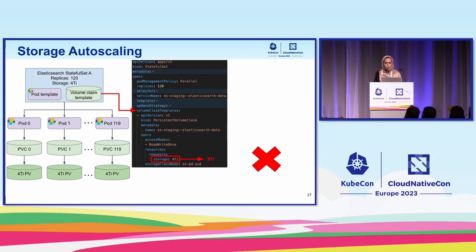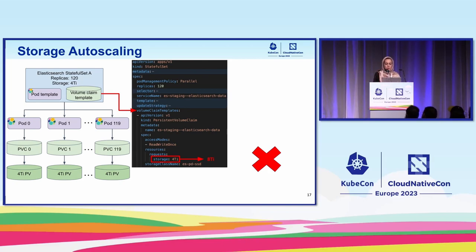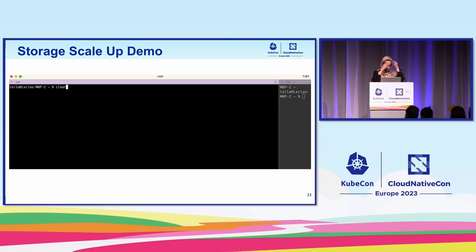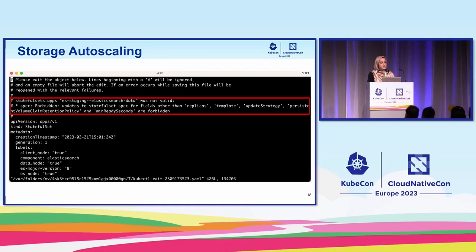How can you expand or shrink the disks of a StatefulSet that already has data? The first approach that comes to mind is simply running kubectl edit statefulset and updating the storage field to a different amount. And you will see that Kubernetes does not allow you to do this. In this recorded video, I attempt to edit an already existing StatefulSet — editing the storage field from two to three tebibytes — and Kubernetes does not allow it. The error shows you are only allowed to update certain fields in a StatefulSet spec: replicas, templates, etc. Storage is not one of them.